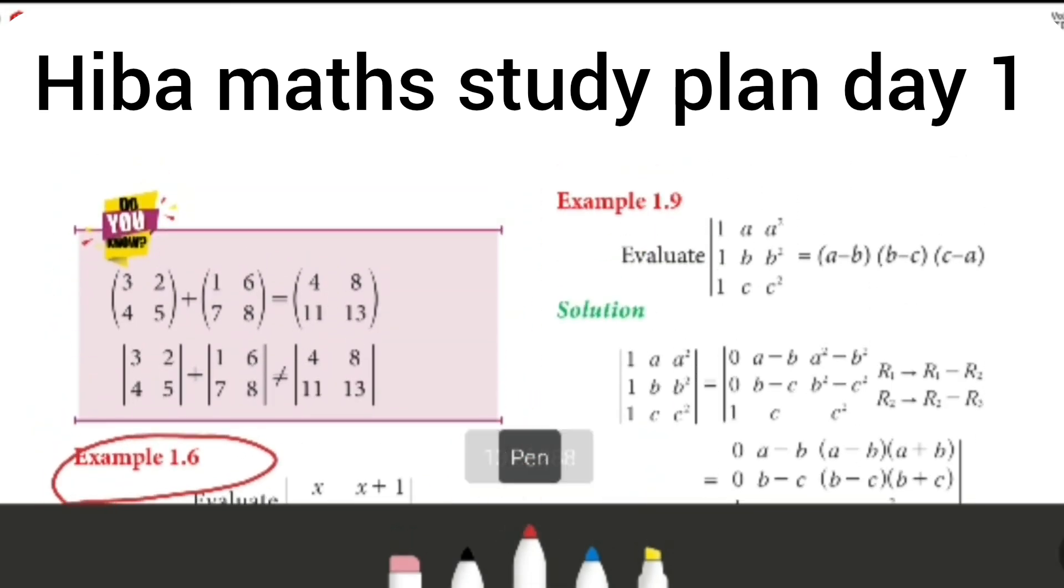Next is Example 1.9. Evaluate 3x3 matrix value A-B, B-C, and C-A. We will prove it. Now we have 9 sums. If we try and solve it, we will complete it.